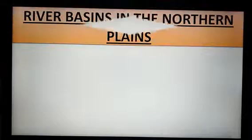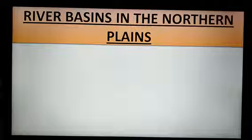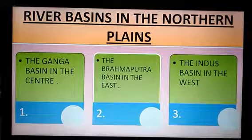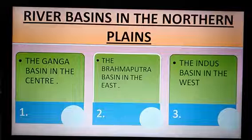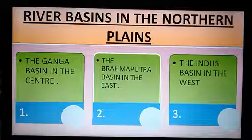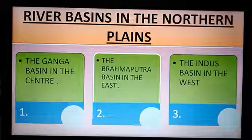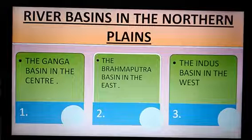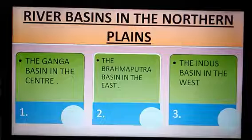Let's move ahead with the river basins in the Northern Plains. The Northern Plains can be divided into three river basins: the Ganga Basin in the center, the Brahmaputra Basin in the east, and the Indus Basin in the west.